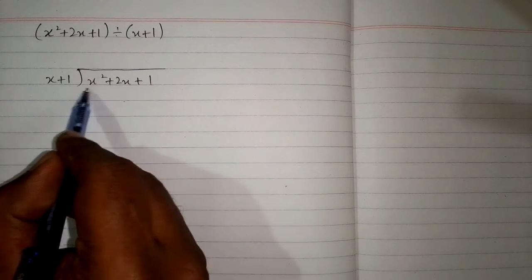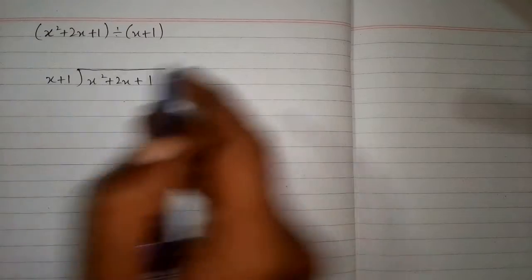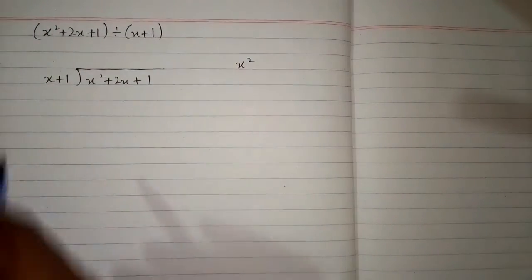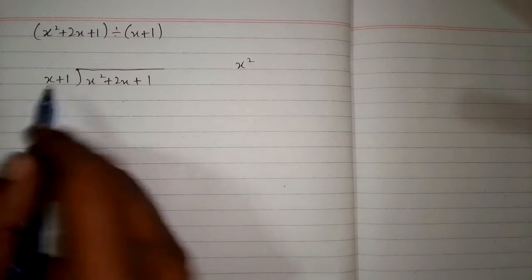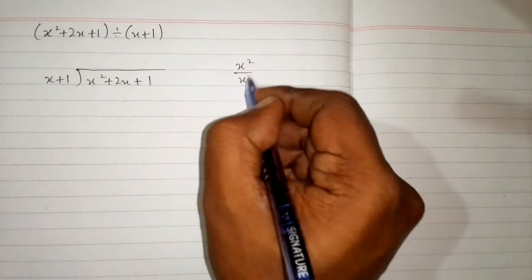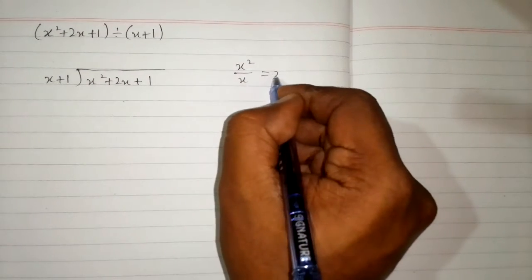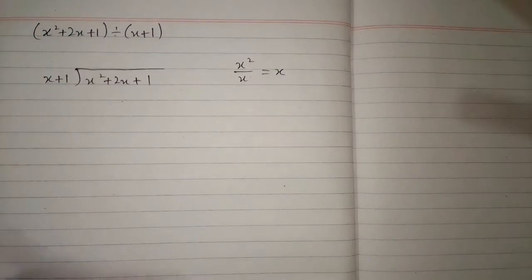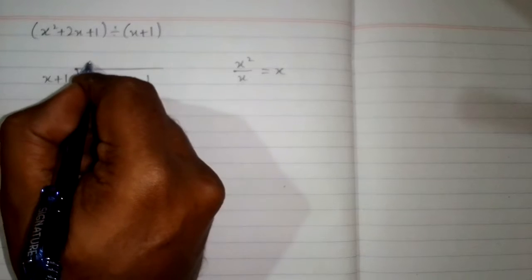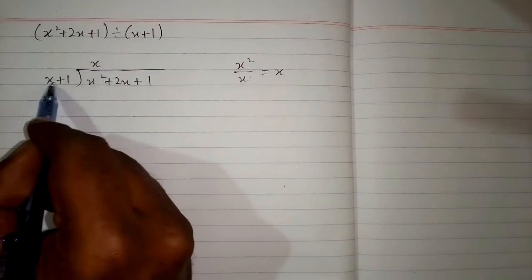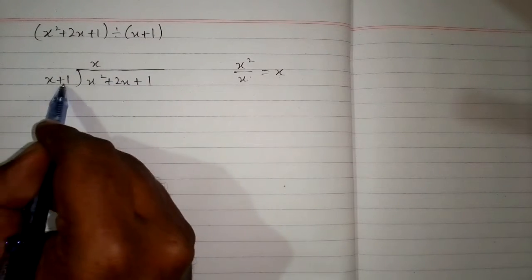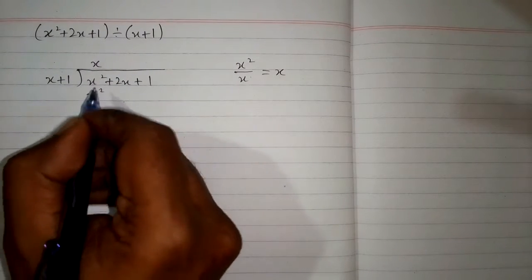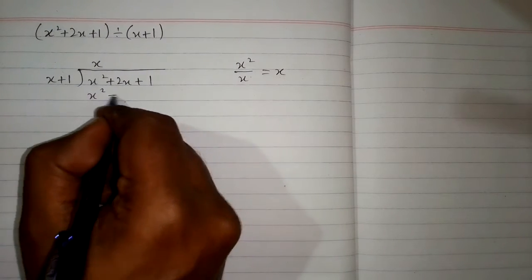First of all we will take the first term of the polynomial, which is x squared, and the first term of the divisor, which is x. So x squared upon x is x, because 2 minus 1 is 1. Now we will write this x over here and then multiply x plus 1 by x. So x times x is x squared, and x times plus 1 is x.